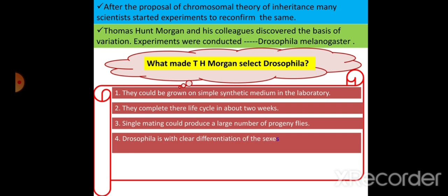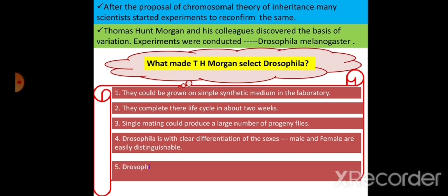The fourth reason is that Drosophila shows clear differentiation of the sexes — male and female can be easily identified and differentiated. The fifth reason is that Drosophila has many types of hereditary variations, like white eye, yellow body, and miniature wing, all of which we will study in this module.